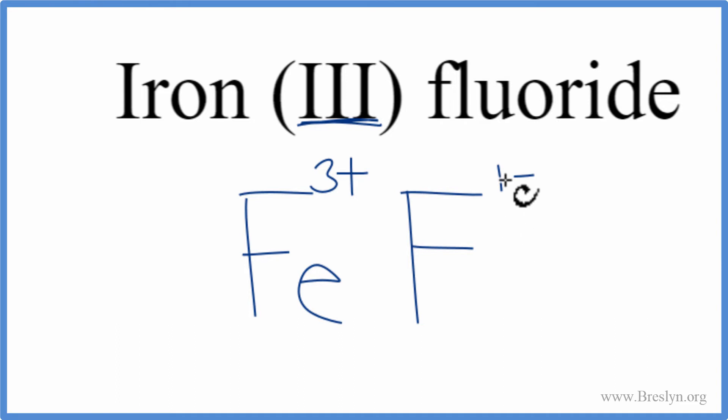So these don't add up to zero right now, but we can change the subscripts to make that happen. We use the crisscross method. We move the 1 down here, the 3 over here. We don't write the 1 by convention. Get rid of this. And that's the formula for iron-3-fluoride.